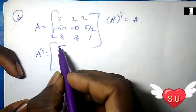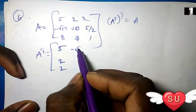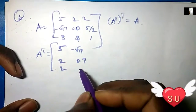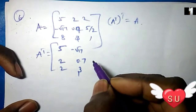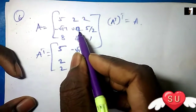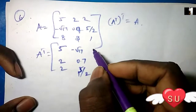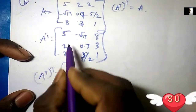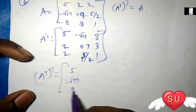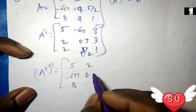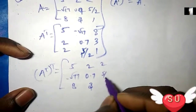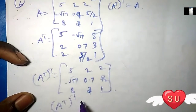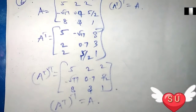Column change. A-transpose of transpose is below. Root 17, 0.75 divided by 2 — okay, next number: 5 minus root 17, next 8, next 0.73 divided by 2. So this matrix: transpose of transpose equals A.